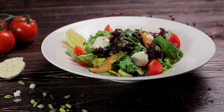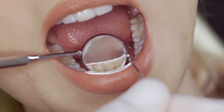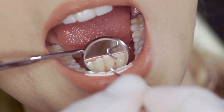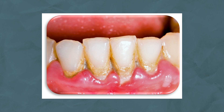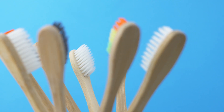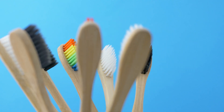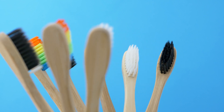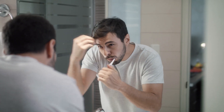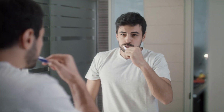Over time, dental plaque can pick up minerals from your food and saliva, which will cause it to become very hard and difficult to remove. At this stage it is now called calculus, or tartar. So the aim is to implement a thorough oral hygiene routine to remove soft plaque effectively twice a day, before the plaque gets a chance to mature or form calculus. Improving your oral hygiene will reduce your risk of gum disease.